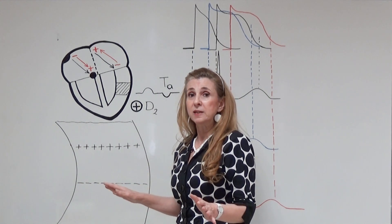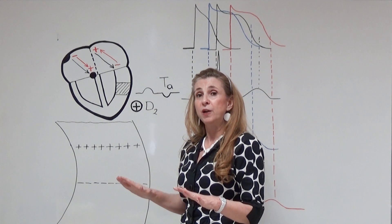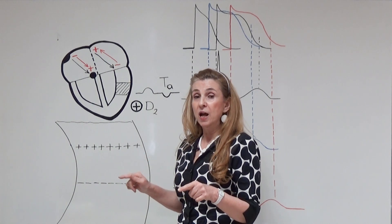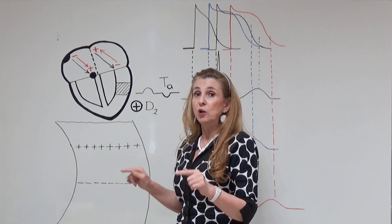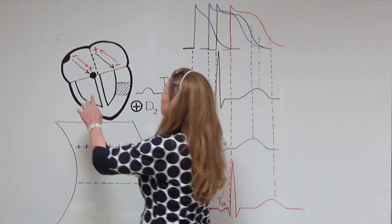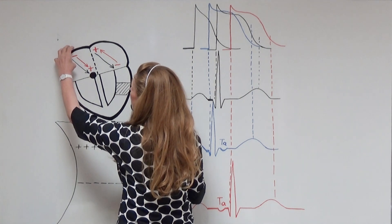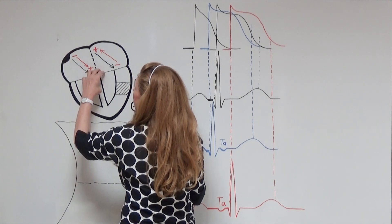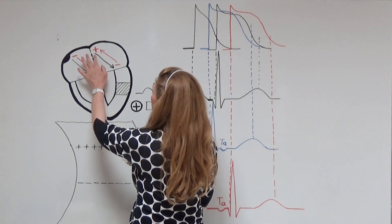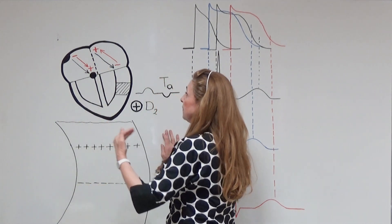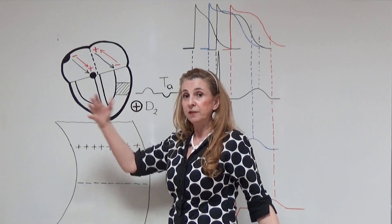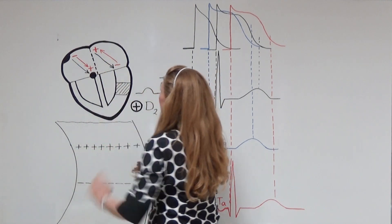After all cells are depolarized, all cells in the atria are negatively charged on their outside, and then repolarization starts. In the atria, the first cells that are going to repolarize are the cells that first depolarized. This means repolarization also starts in the neighborhood of the SA node and moves towards the AV node — again from up to downward and right to left, as shown by the black arrow.